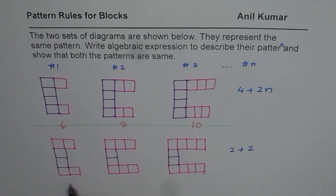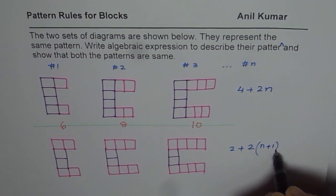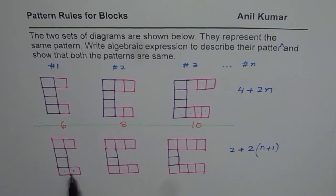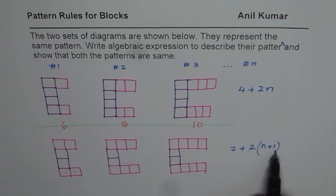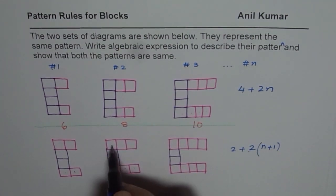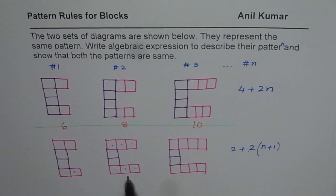We want to get 4, and this is figure number 1. So we use 2 sets of (n + 1). n is 1 here, so n + 1 gives 2, and we have 2 sets of these — so 2 times (n + 1). It's kind of tricky, so you need to practice to get this. So 2 times (n + 1): for figure 1 we get 2 sets of 2, and 1 more than the figure number gives us the pattern.